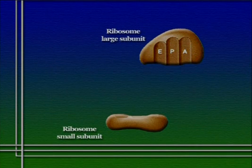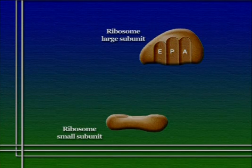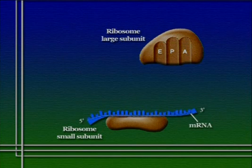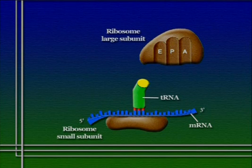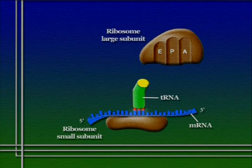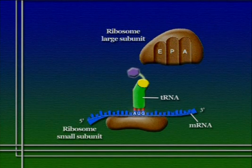Ribosomes are divided into two main subunits: a larger subunit and a smaller subunit. Before initiation occurs, these two subunits exist separately in the cytoplasm of the cell. Initiation starts when the small subunit of the ribosome binds to two things: first, a messenger RNA molecule, and also a special tRNA that acts as the initiator tRNA. Going back to the genetic code, that initiator tRNA will have the anticodon corresponding to the start codon AUG, which codes for methionine. So the initiator tRNA will have a methionine attached to it.